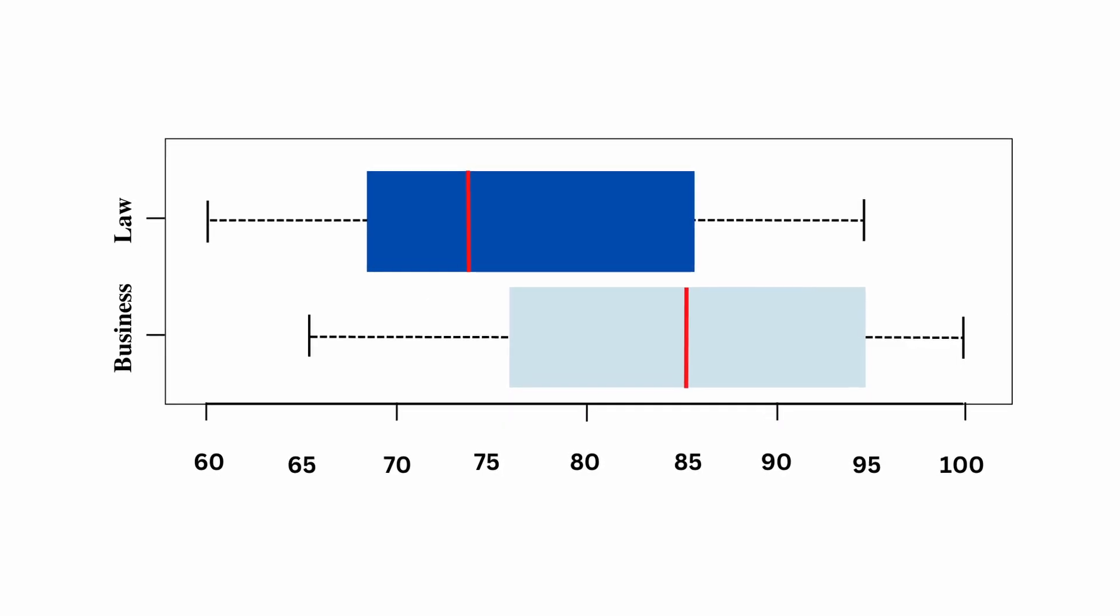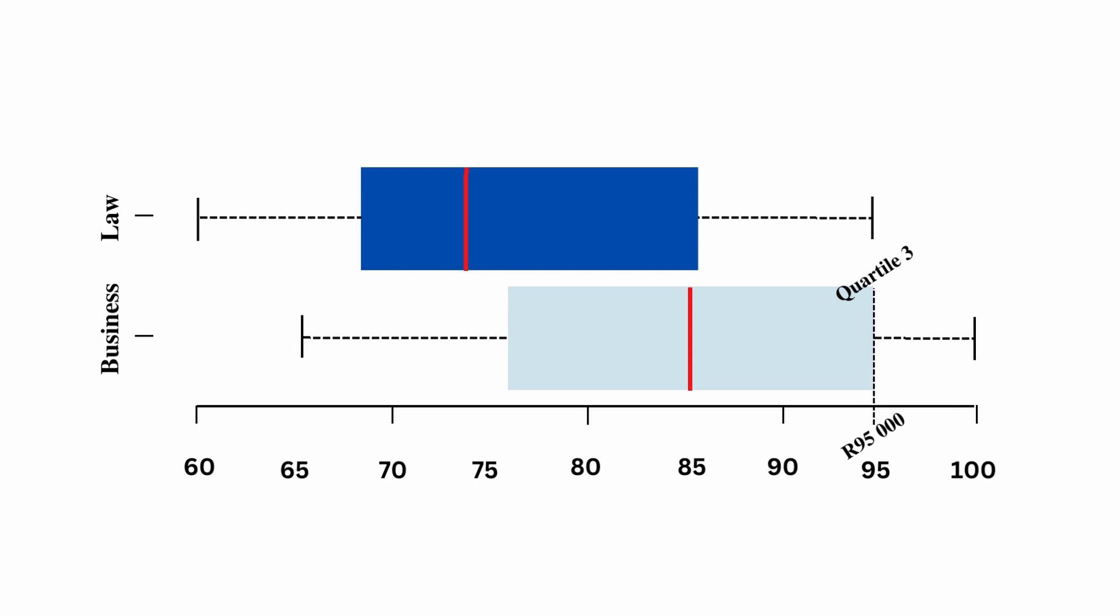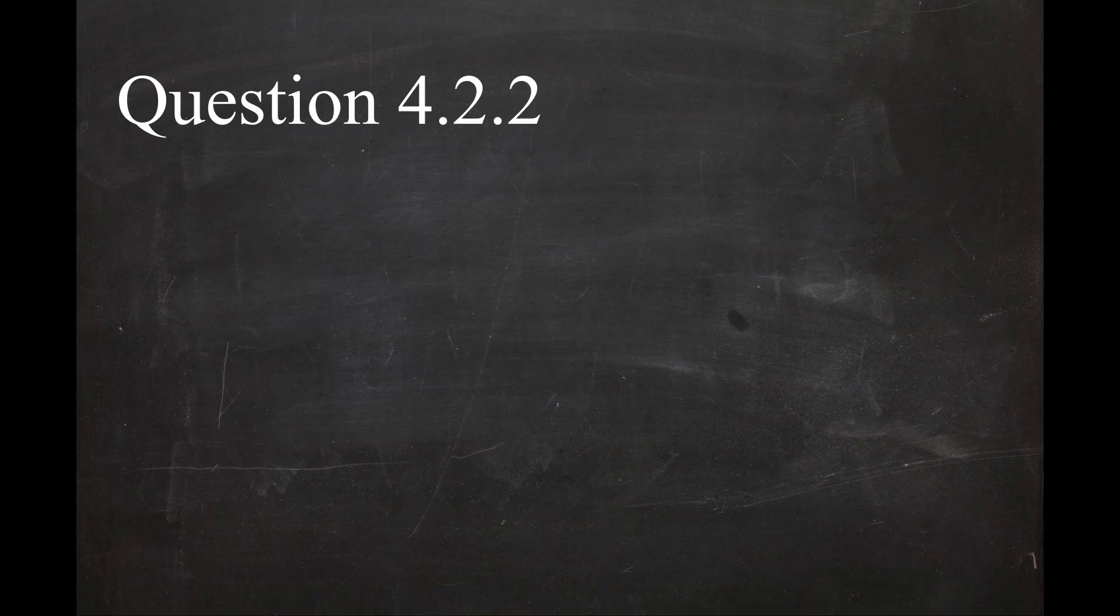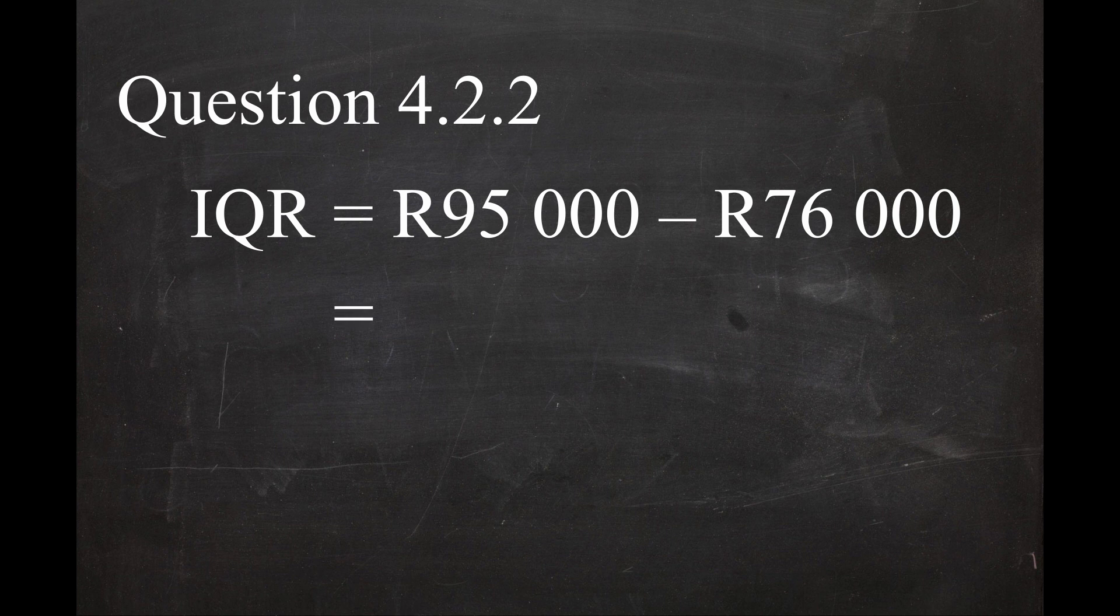For the business field, the value of quartile 3 is estimated as 95,000 rand and the value of quartile 1 is estimated as 76,000 rand. So the interquartile range is 95,000 rand minus 76,000 rand, and this equals 19,000 rand.